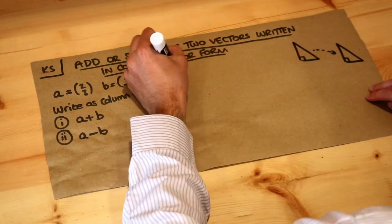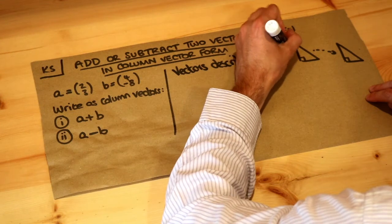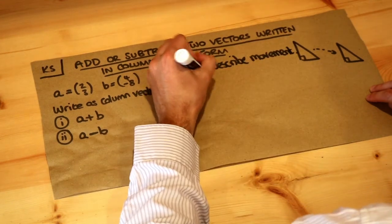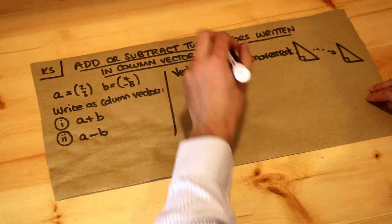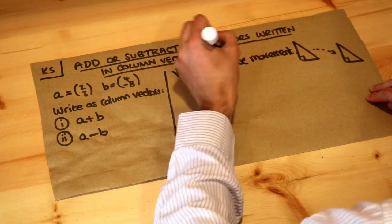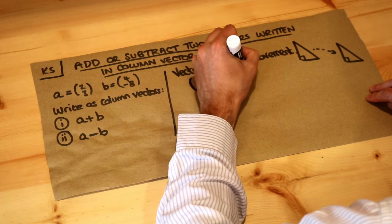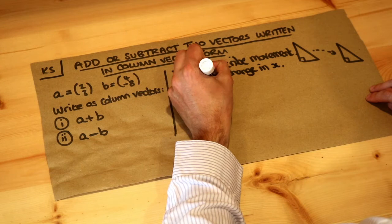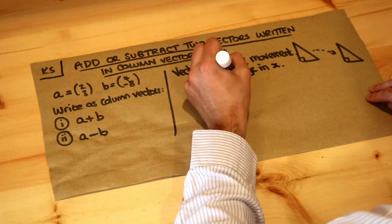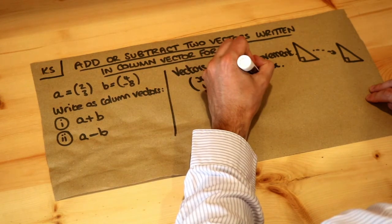Vectors describe movement and we can write a vector like this: x, y. It looks a bit like a coordinate but the numbers go above each other. The top number is the change in x in the movement, so is the x value increasing by 3 or going down by 2. The bottom value is the change in the y value.